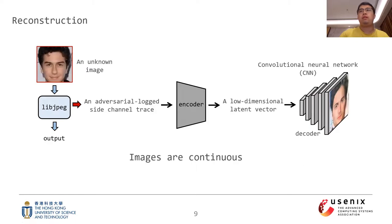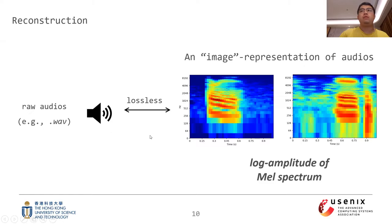Let's first see the image decoder. Since pixel values are floating-point numbers, images are continuous. Following the standard approach, we use a convolutional neural network as the image decoder. The private image can be generated by upsampling progressively. Similar to images, audios are also continuous. However, it's challenging to generate audios in their raw format. To eliminate this hurdle, we use an image representation of audios — specifically, an audio can be represented using its log amplitude of the mel spectrum, and the conversion is lossless. Therefore, we can reconstruct audios from side channels following the same method as for images.